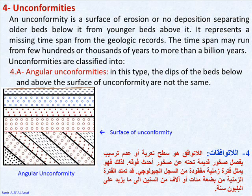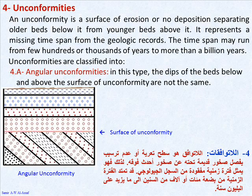4. Unconformities — an unconformity is a surface of erosion or non-deposition separating older beds below it from younger beds above it. It represents a missing time span from the geologic record. The time span may range from a few hundreds or thousands of years to more than a billion years.